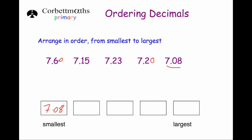Next, looking at the tenths column again, we've got 6, 1, 2 and 2. The 1 is the next smallest number, so 7.15. Next we've got a 6, a 2 and a 2 — two numbers with 2 in the tenths column, so we can't necessarily tell which is smallest by just looking at the tenths column.